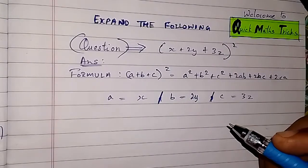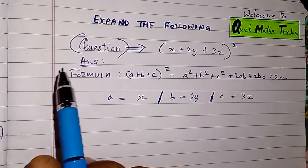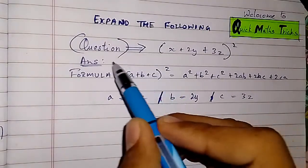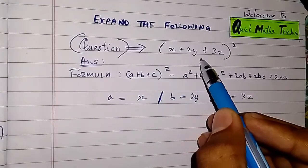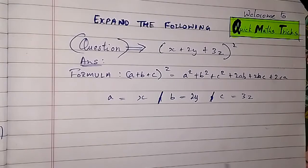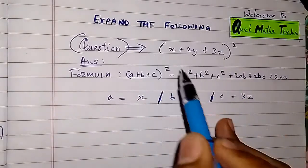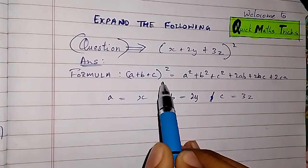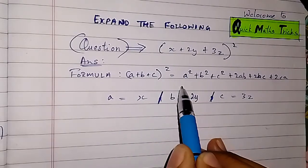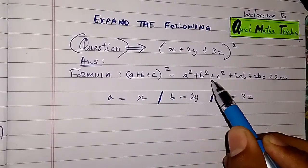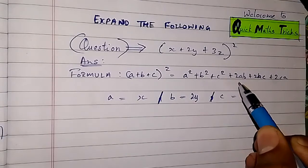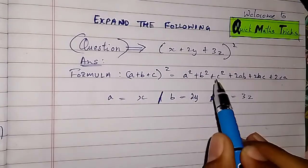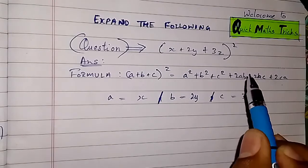Welcome to Quickmax Tricks. Today we see how to expand the following question: (x + 2y + 3z) squared. The formula to expand this is: (a + b + c) whole square is equal to a square plus b square plus c square plus 2ab plus 2bc plus 2ca. This is the formula we will use.